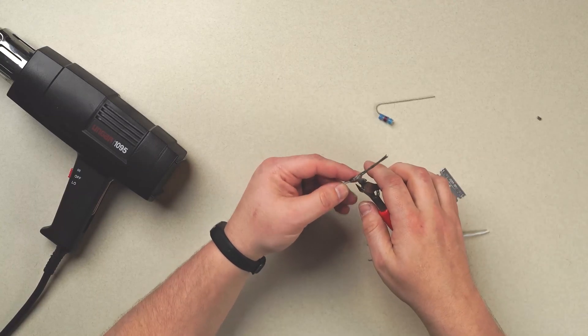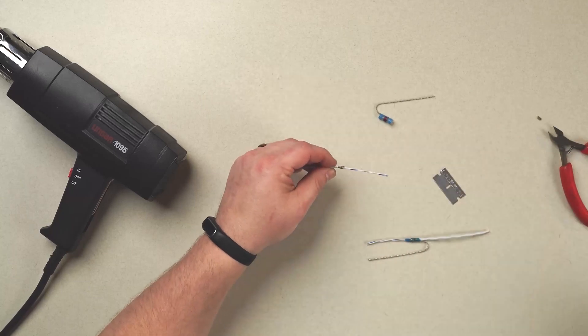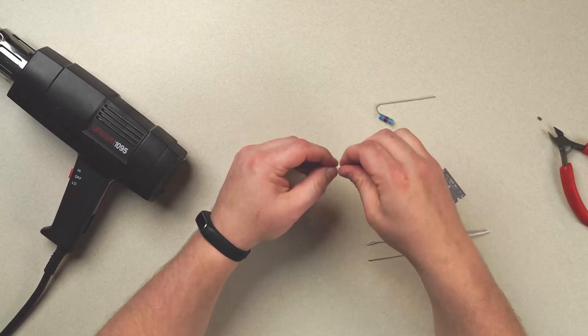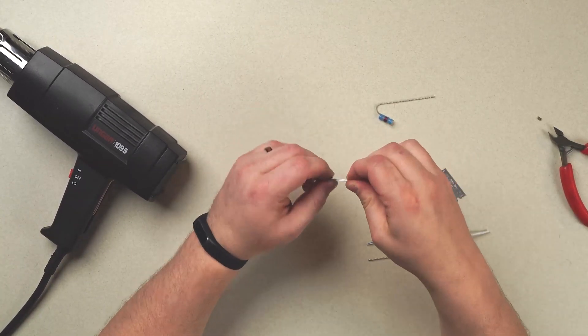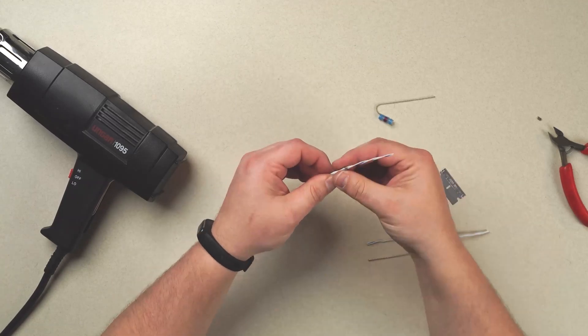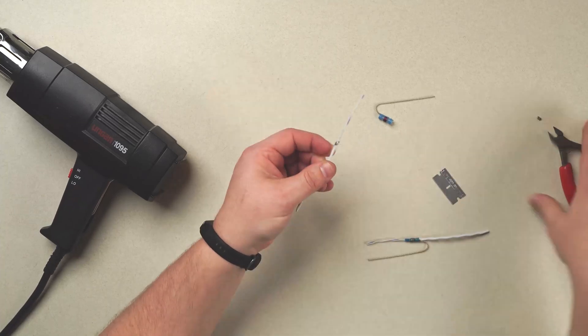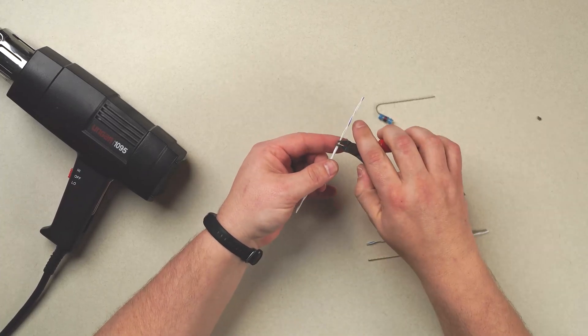You also want to make sure you get the strain relief paper that is usually along the center conductors. We make our shielding as neat as we can. Remove any excess strain relief.